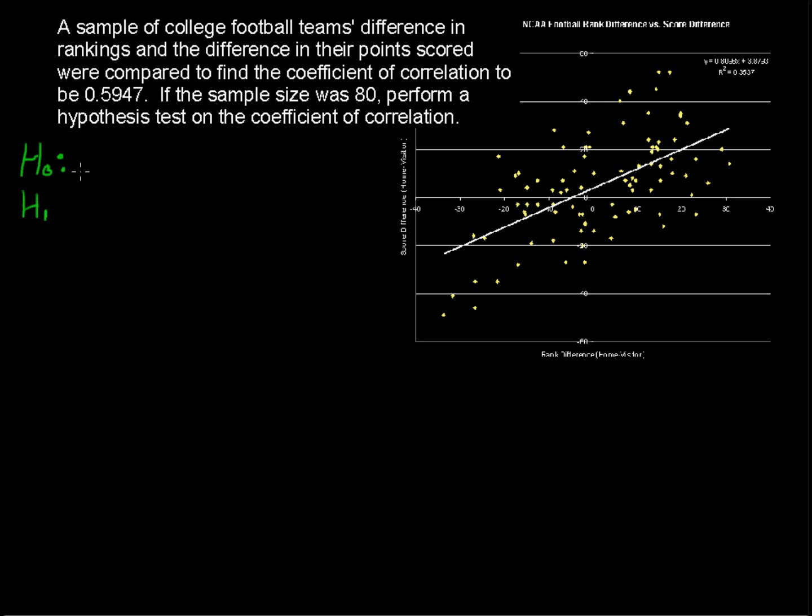And the null hypothesis is that the Greek letter rho, it's not a p, it's a rho, equals zero. So that's like our real r here, the real coefficient of correlation. If you had all of the data, all the population of all the games that have ever been played and never will be played.